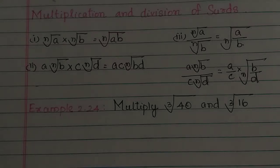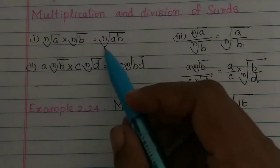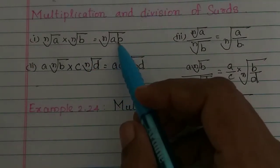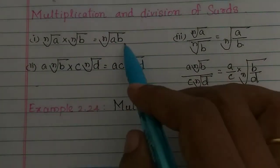Hi students. In this video, we will look at multiplication and division of radicals. The key rule is: the nth root of a, times the nth root of b, is equal to the nth root of a·b. Let's see what we have to do.